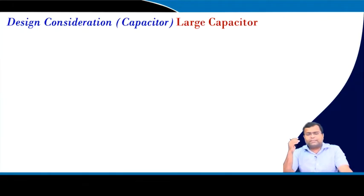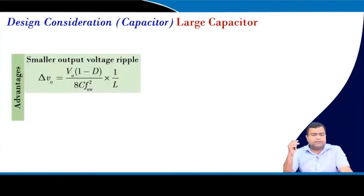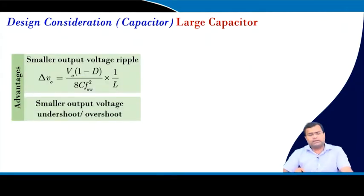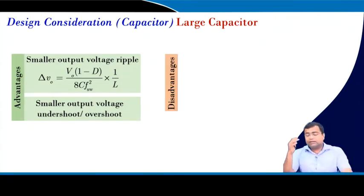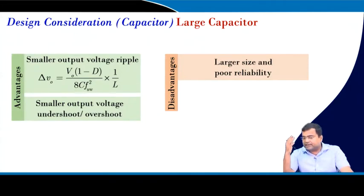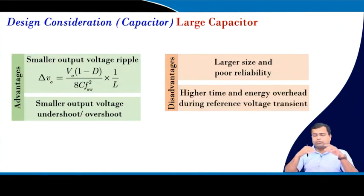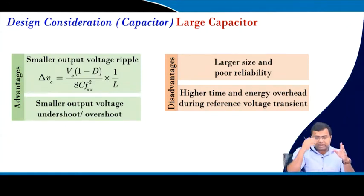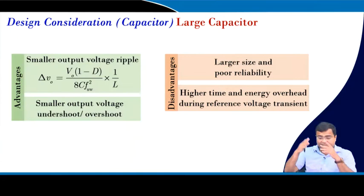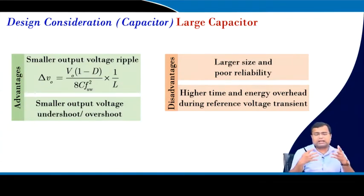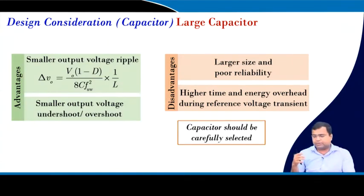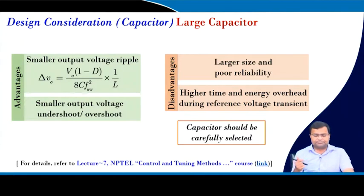If you take a large capacitor, it offers smaller output voltage ripple and reduces overshoot and undershoot of the output voltage. However, the size is bulky, reliability is poor, and if you are targeting dynamic voltage scaling (DVS), a large capacitor requires changing a large amount of stored energy, which causes higher current overshoot and undershoot. So you have to be very careful about capacitor selection.